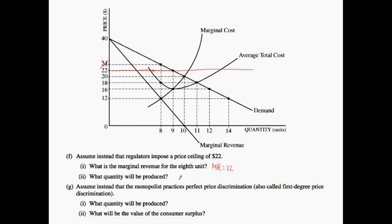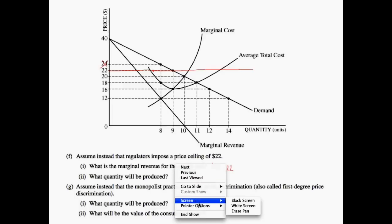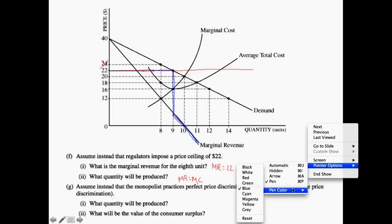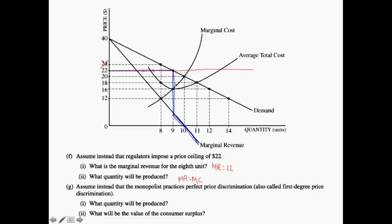Now let's look at what the quantity produced would be. We want to see where marginal revenue equals marginal cost. First, let's draw the new marginal revenue curve. Because of this price ceiling, the monopolist can no longer charge a price above $22, therefore the new marginal revenue curve changes accordingly. We need to look at where marginal revenue equals marginal cost — that happens at this point. Marginal revenue equals marginal cost at this point, and therefore they would set a quantity of 9. So Q equals 9.